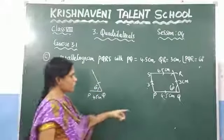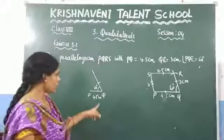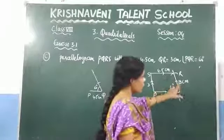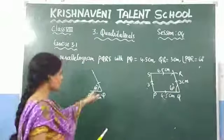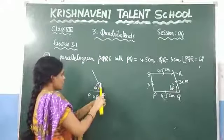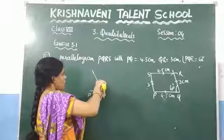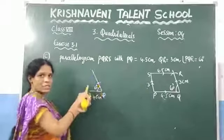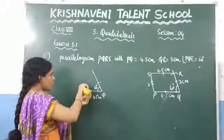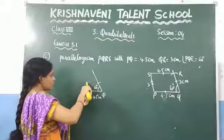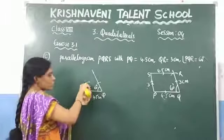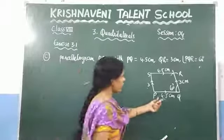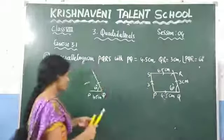Make an arc of 3 centimeters. We have drawn line segment PQ of 4.5, and at vertex Q, we have drawn an angle of 60 degrees, and at point Q, we have made an arc of 3 centimeters. Opposite sides are equal, so this side is 3. I have made an arc of 3 centimeters, and this opposite length must be equal because opposite sides are equal. At that point, we also make an arc of 3 centimeters. This is 3 and this is also 3.